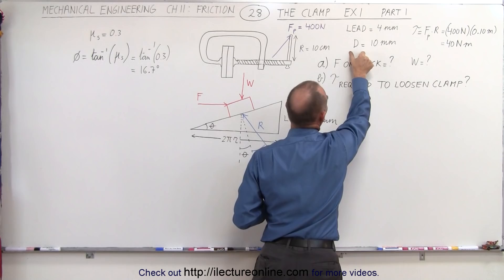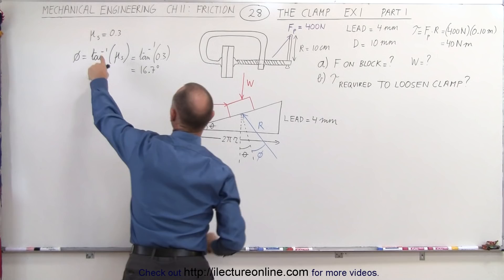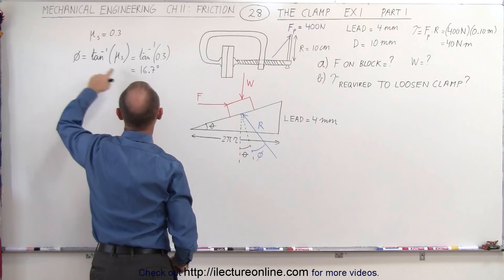So what we're trying to do here is find out what the applied force is to the block based upon these parameters, also knowing that the static coefficient of friction is equal to 0.3, which gives us an angle phi of 16.7 degrees.